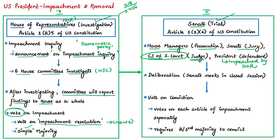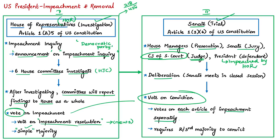Once deliberation is completed in the Senate, it votes on each article of impeachment separately. Here it requires a two-thirds majority for conviction, which results in removal from the presidential office. The Senate in the United States has two members from each state, giving it 100 members. In the US, membership in the Senate is equal for all states — two members per state — whereas in India's Rajya Sabha, membership varies based on the population of each state.